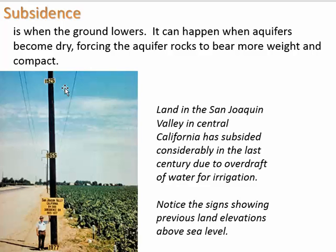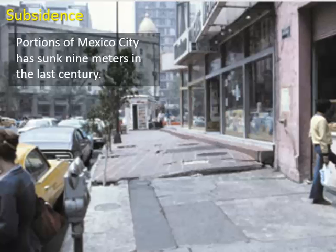Subsidence is when the ground is lowering. You can see the sign — this is where the ground is right now, but the ground used to be at this higher level. The sign has been moving with the land. If you were to go back to 1925, the man would have been standing up here, but the ground has just become compacted with everything moving down. Sometimes we see effects on the surface of subsidence — buckling of sidewalks and so on. Mexico City is experiencing a big deal with subsidence.